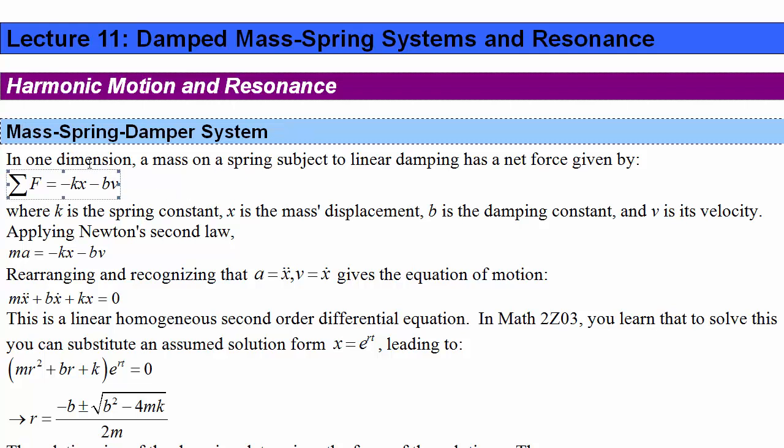Mass spring damper system. Going back to a pretty simple case, one dimension and a mass on a spring subject to a linear damping force. It's a decent approximation if we're at small enough sizes or speeds. The net force is given by the spring force negative kx, where x is the displacement from equilibrium, minus b times v, where b is the damping constant, v the velocity, and k is the spring constant.